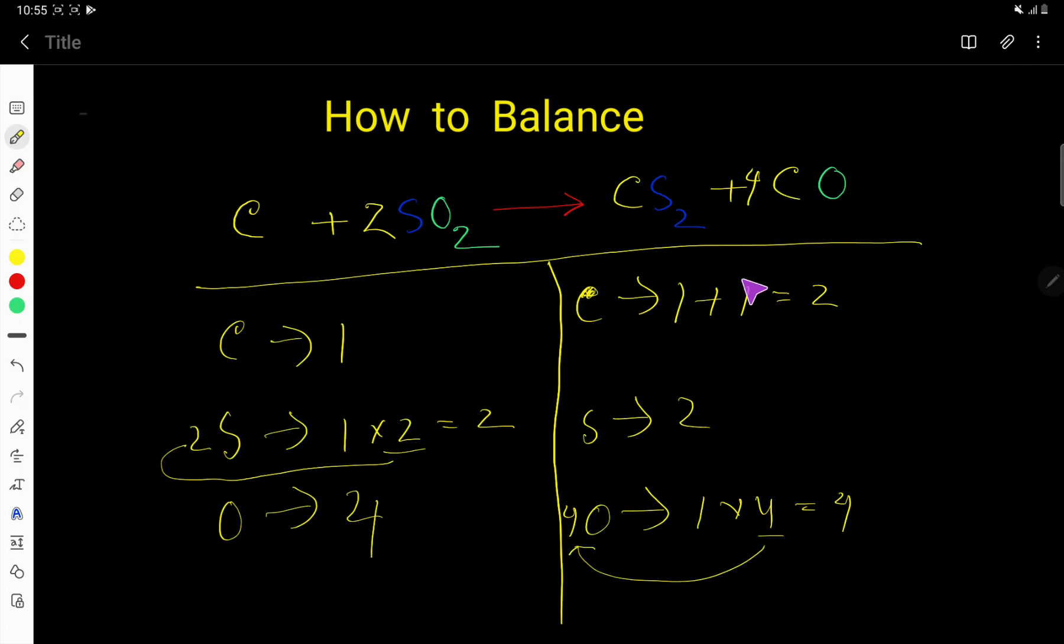Let us change this to 4. Here you're getting 1 plus 4, that is 5 carbon. Then 4 oxygen, so oxygen 4-4, sulfur 2-2. Here carbon is 5, but here it's 1.